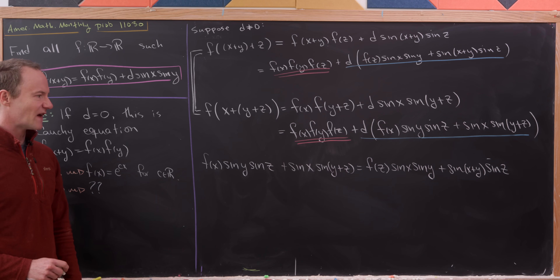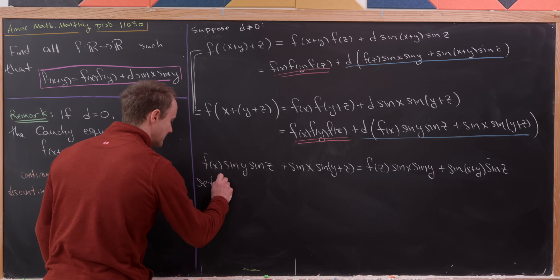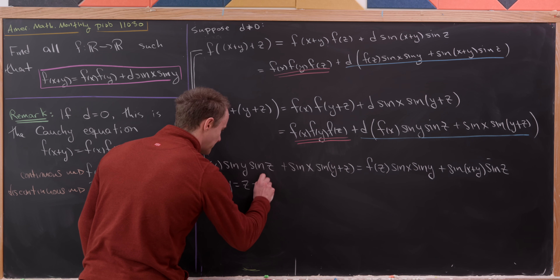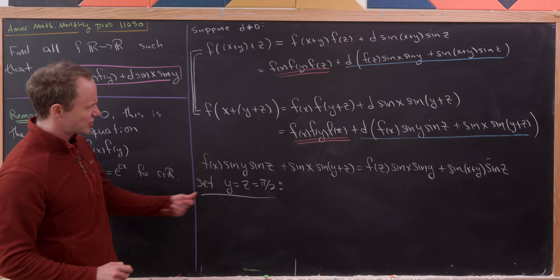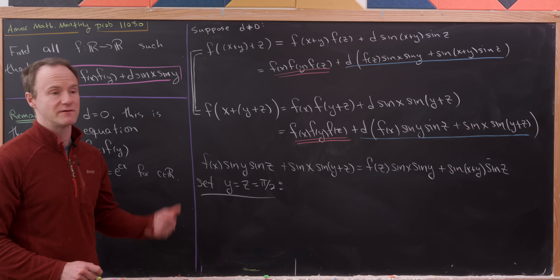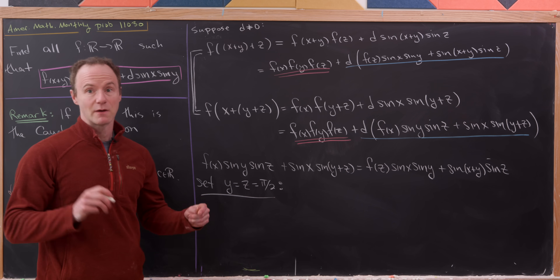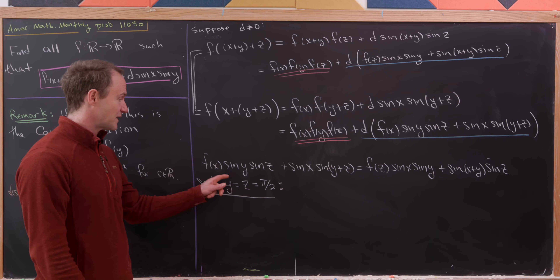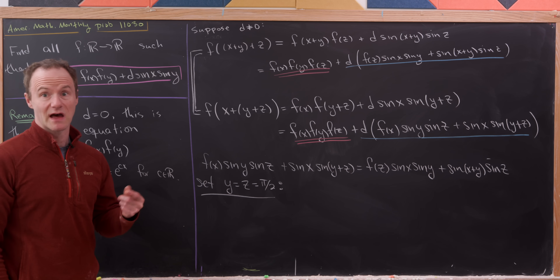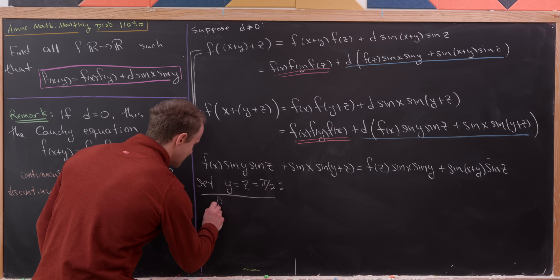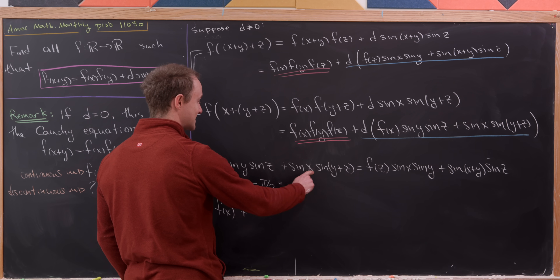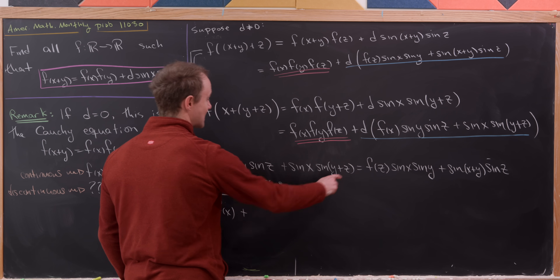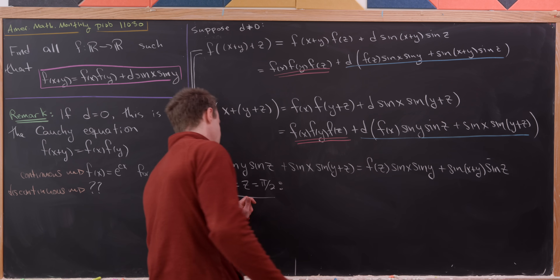Now let's evaluate this with y = z = π/2. Since sin(π/2) = 1, the left side gives f(x) plus sin(x)·sin(π) — but sin(π) = 0, so that term vanishes, leaving just f(x).